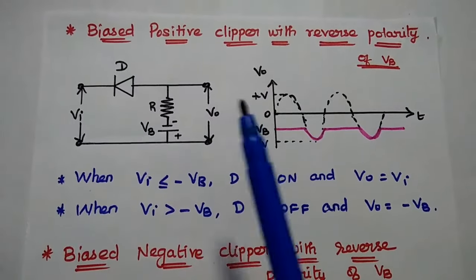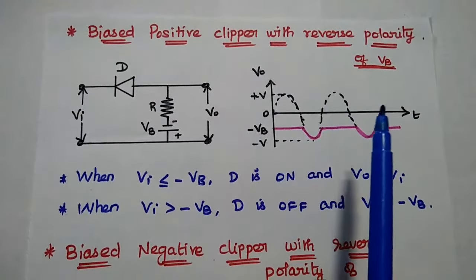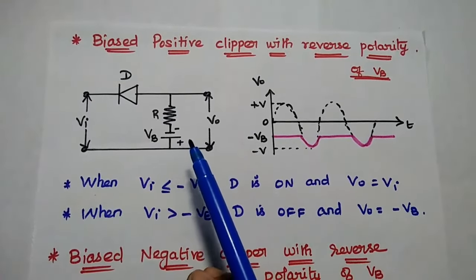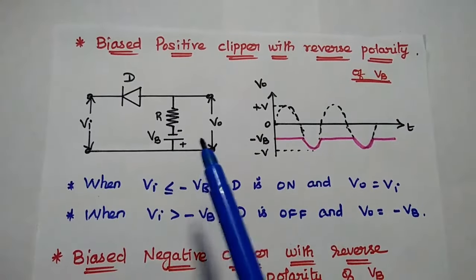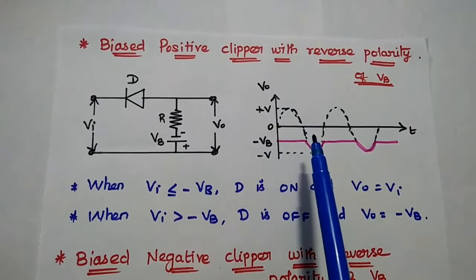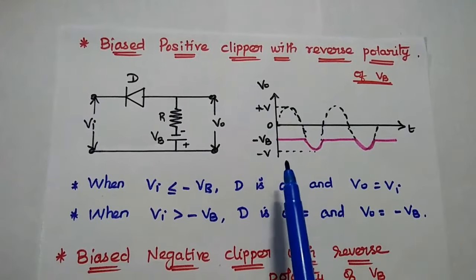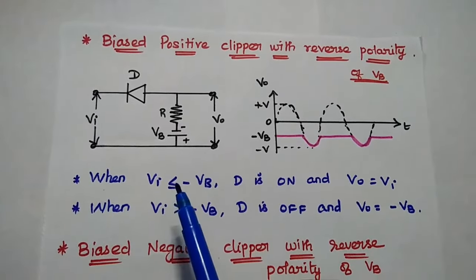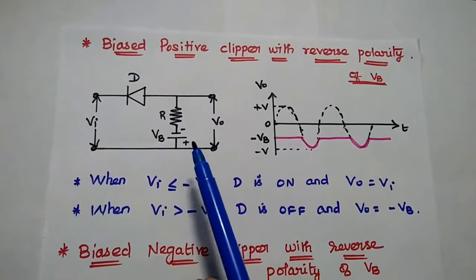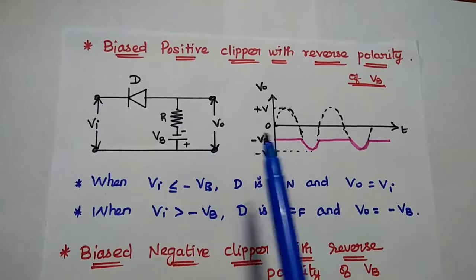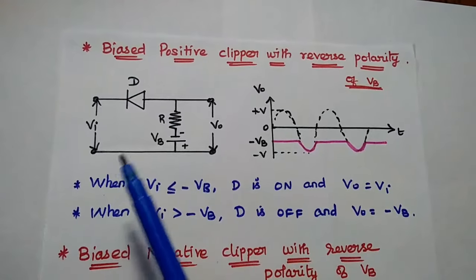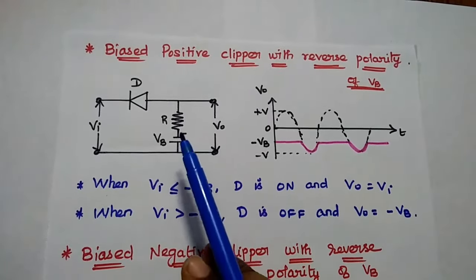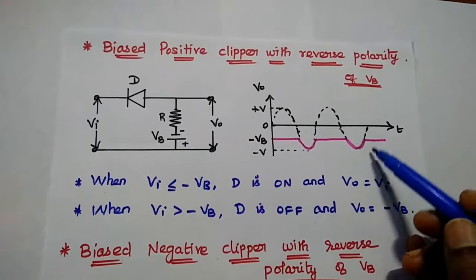Next is the biased positive clipper with reverse polarity — that is, the biasing voltage is reversed to minus VB in the positive clipper. In this case, we can clip off all of the positive side along with a portion of the negative cycle. We get the output only for minus VB and greater than that value. Whenever the input voltage is less than or equal to the negative biasing voltage, the diode is on and the output equals the input. Whenever the input voltage is greater than the negative biasing voltage, the diode is off — opposite to the standard biased positive clipper.